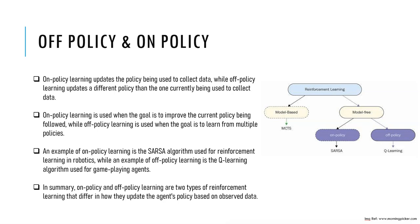For example, suppose you have an agent learning to play a game of chess. In on policy learning, the agent will follow a predetermined policy for making moves and will update the policy based on the feedback it receives from the game. If the agent makes a move that results in a positive outcome, it will reinforce that move in its policy and be more likely to make that move again in the future.